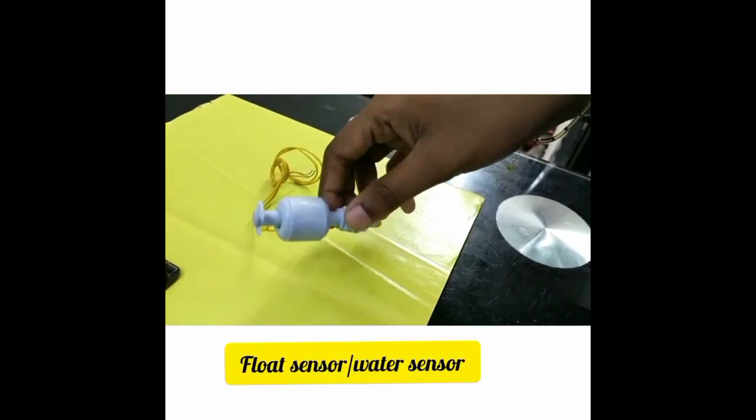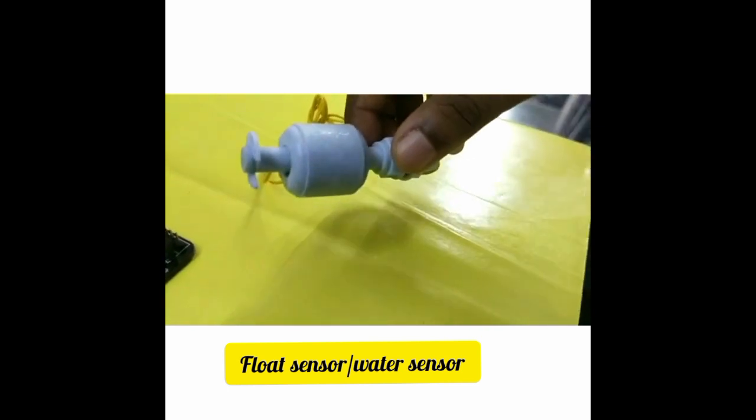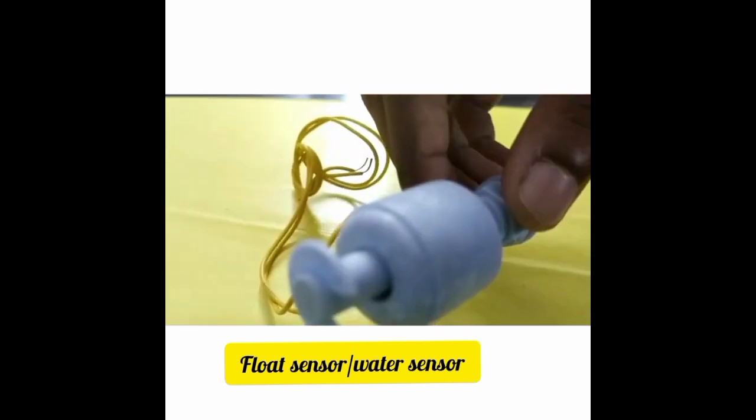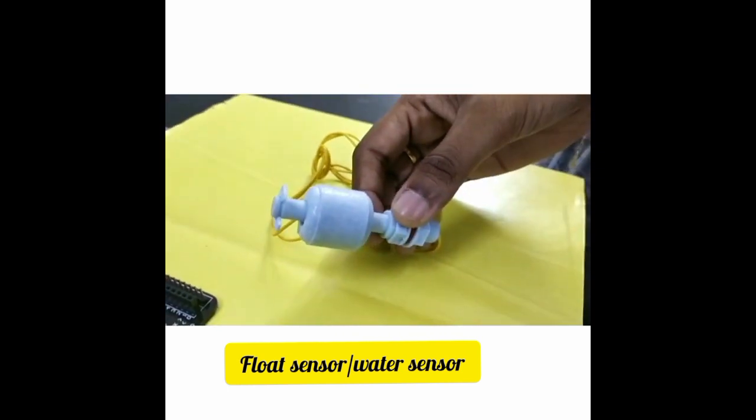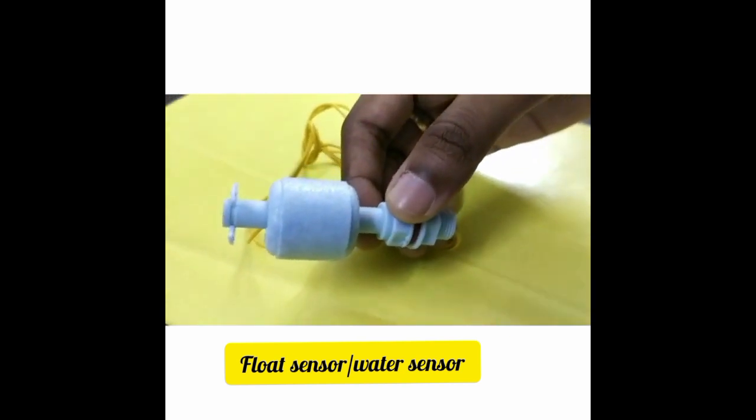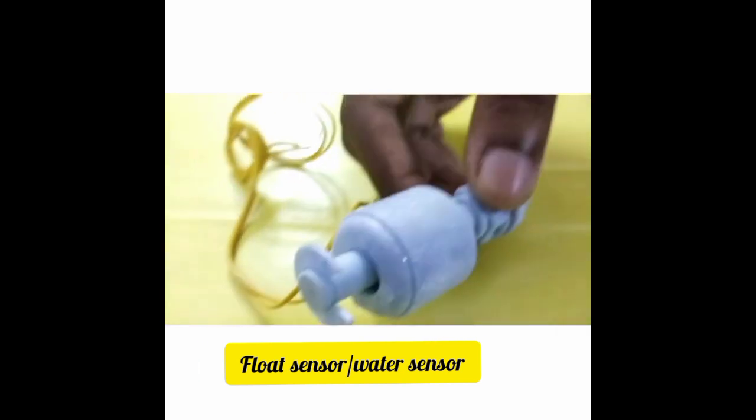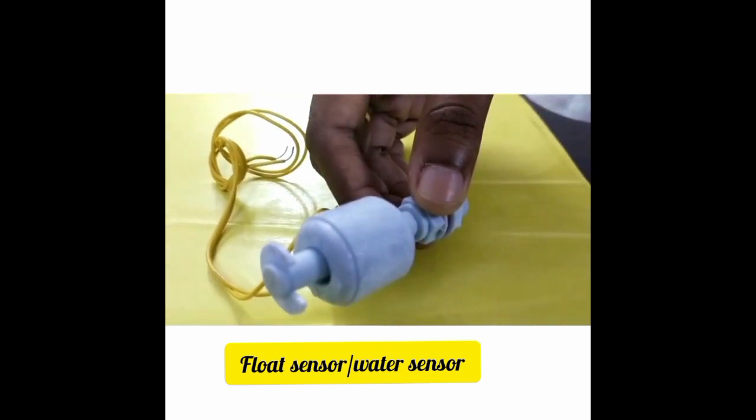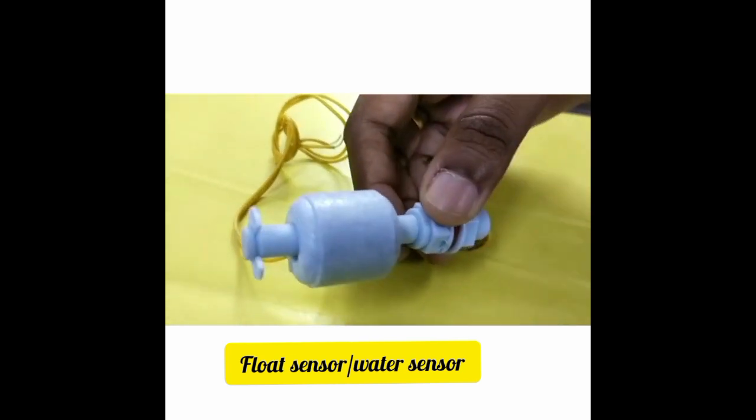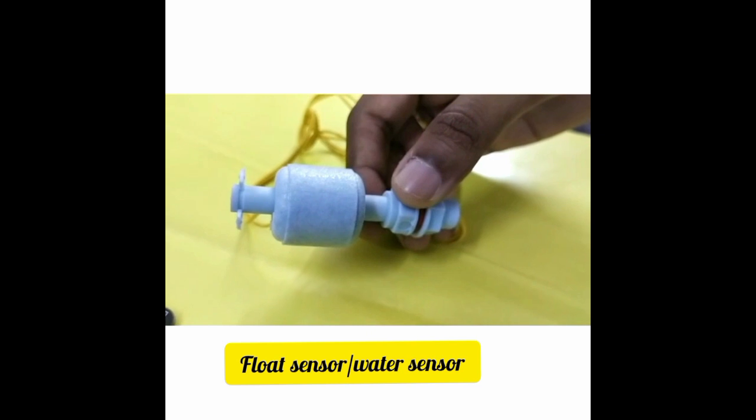Magnetic float sensor is a device used to detect the level of liquid within a tank. The switch may be used in a pump, an indicator or alarm or other devices. Magnetic float sensor is an electromagnetic on or off switch. It helps to sense the level of water present in the overhead tank.